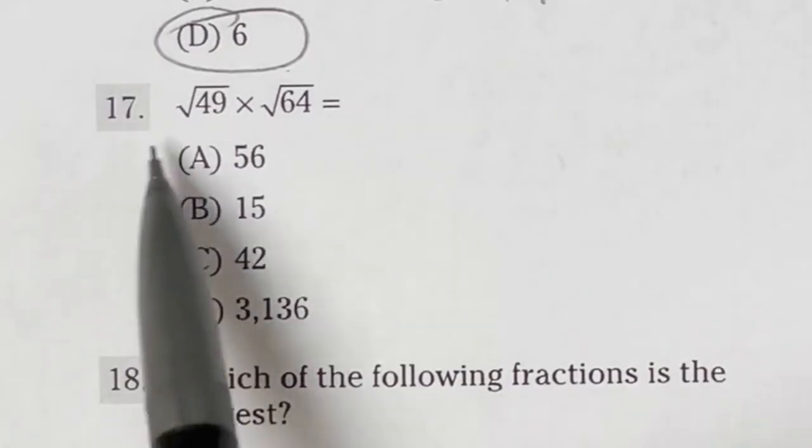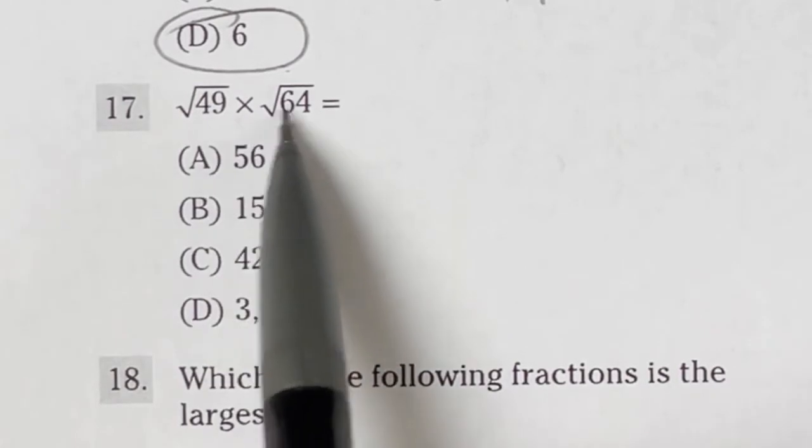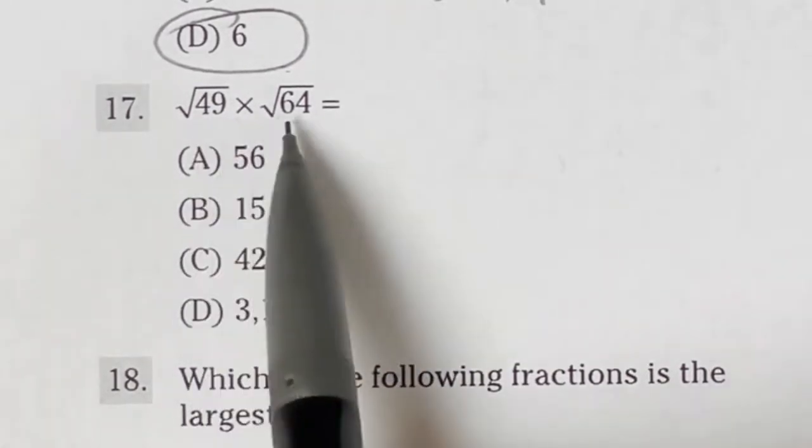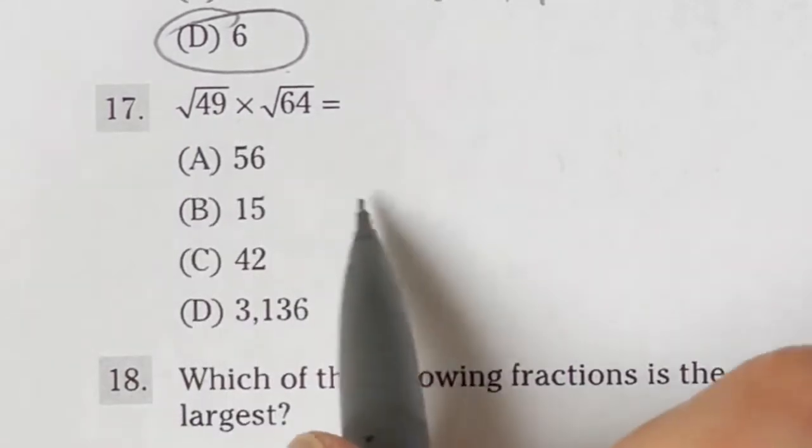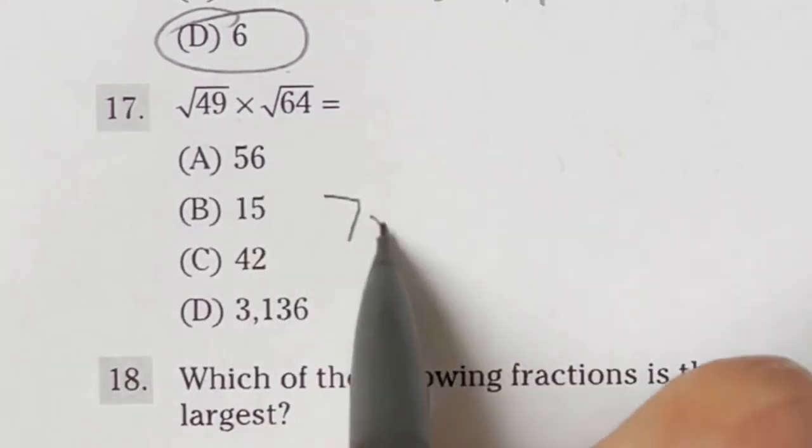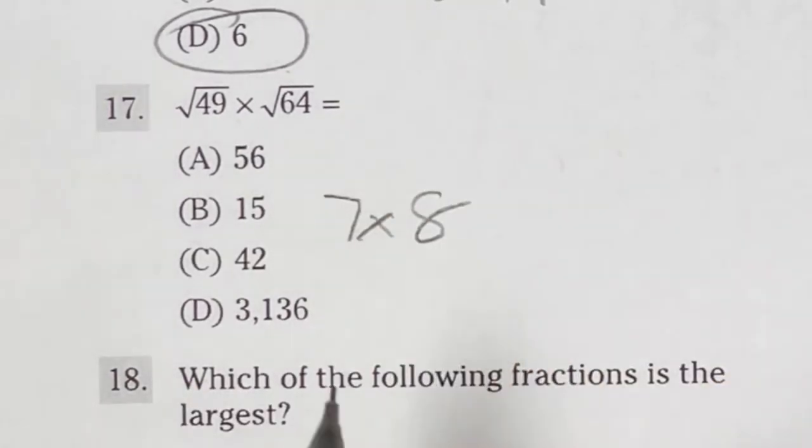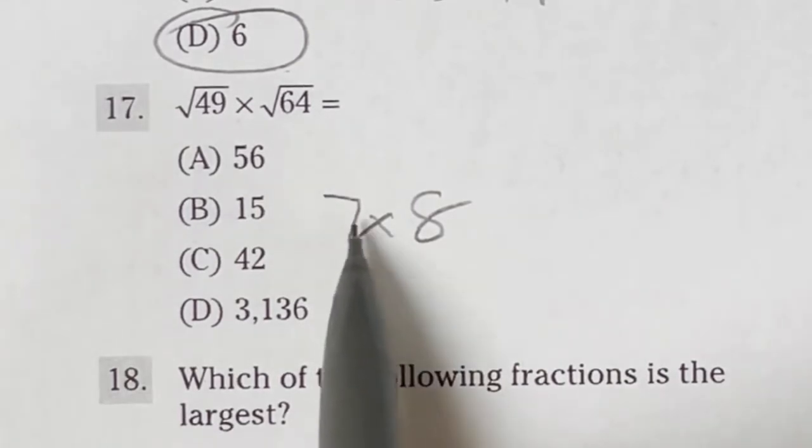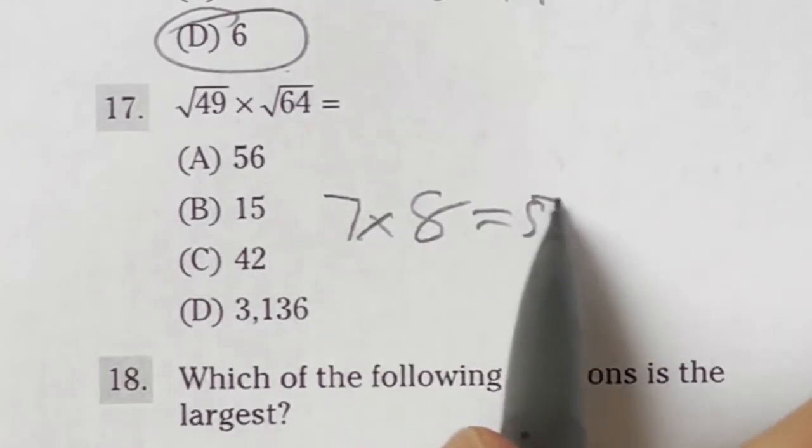Number 17 on the ASVAB says that the square root of 49 times the square root of 64 is what? This is testing to see if you know common square roots. Square root of 49 is just 7, and the square root of 64 is 8. So really, this question is just asking you, what is 7 times 8? And the answer to that is 56.